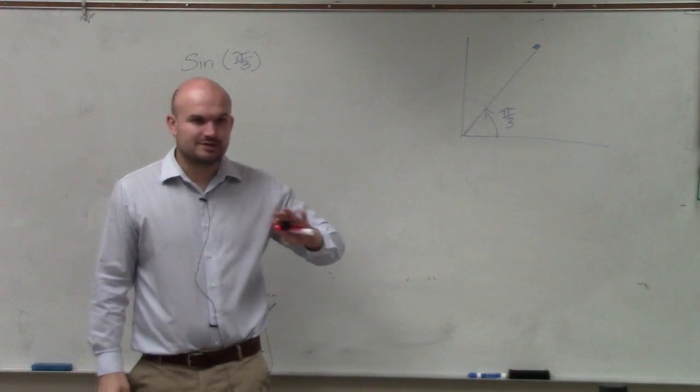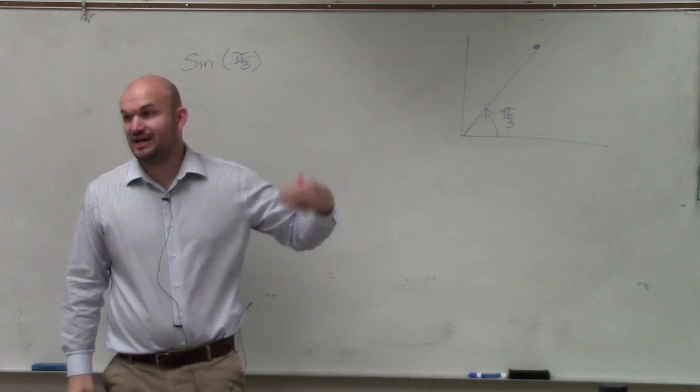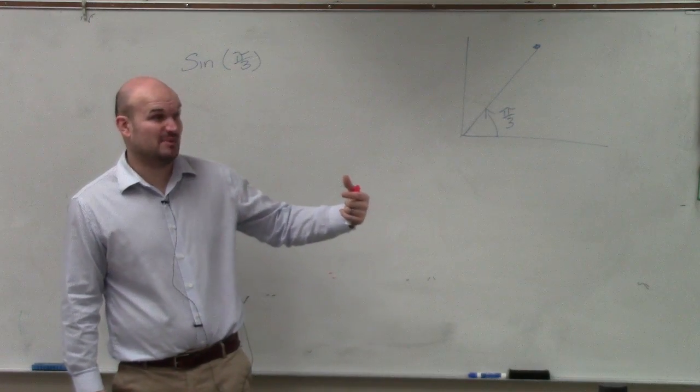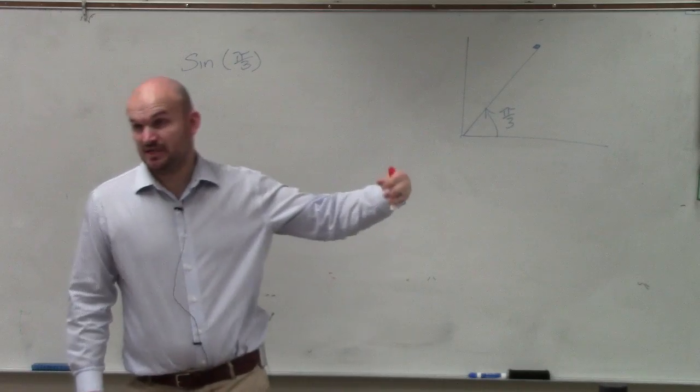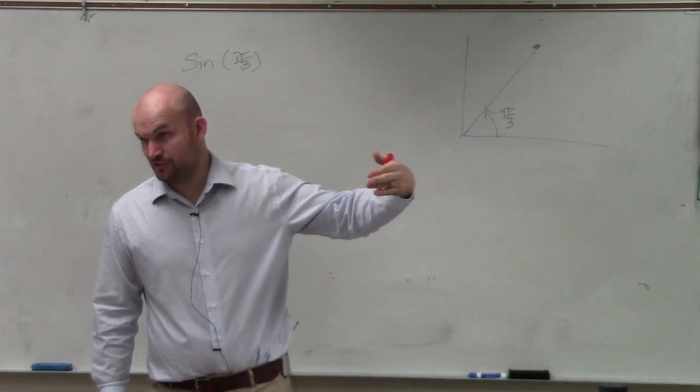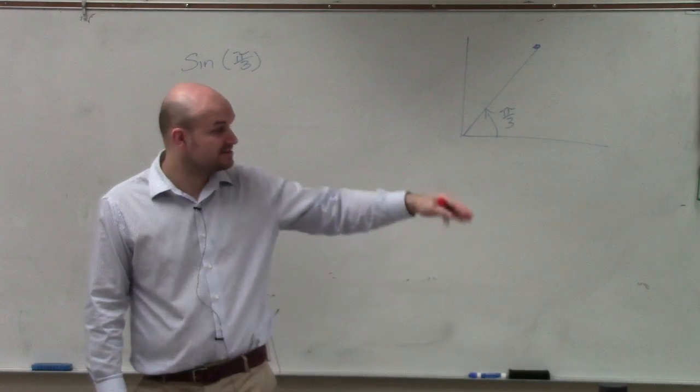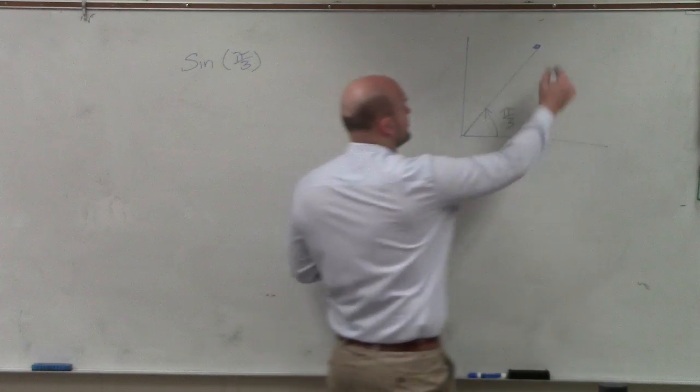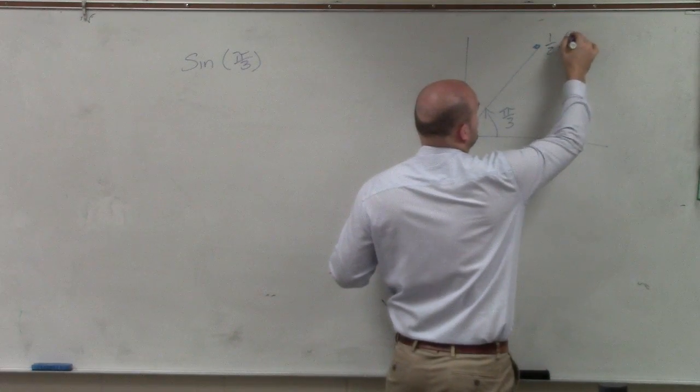I already know my unit circle, so I can tell you what this point is. But you guys should be at this point too. Remember I told you before this quiz, you're going to need to know this too and not have to look down at a unit circle or have it somewhat memorized. Pi over 3, I know this point is 1/2 comma square root of 3 over 2.